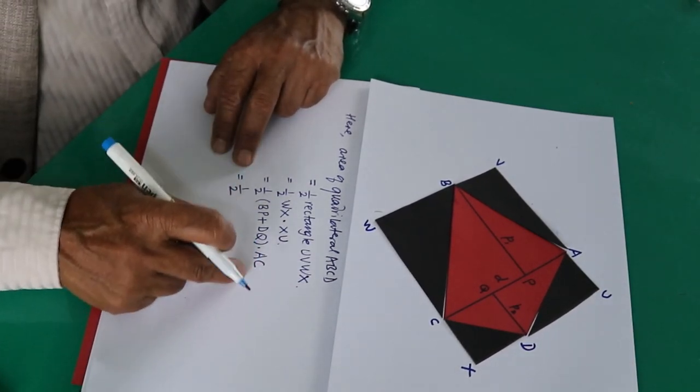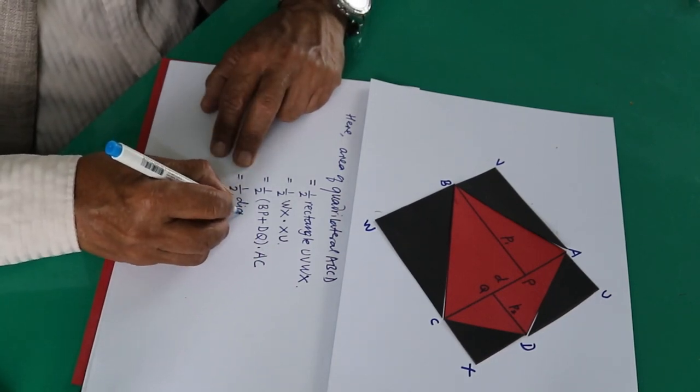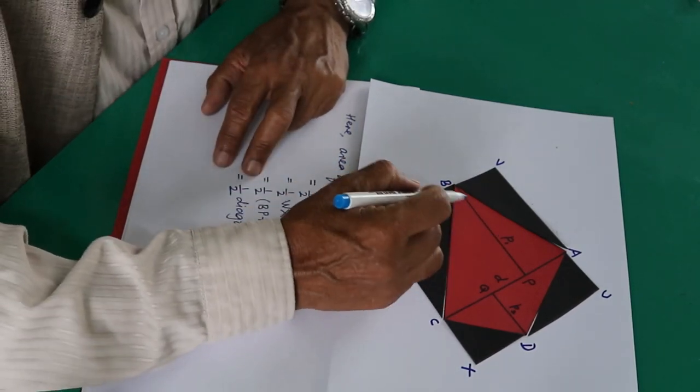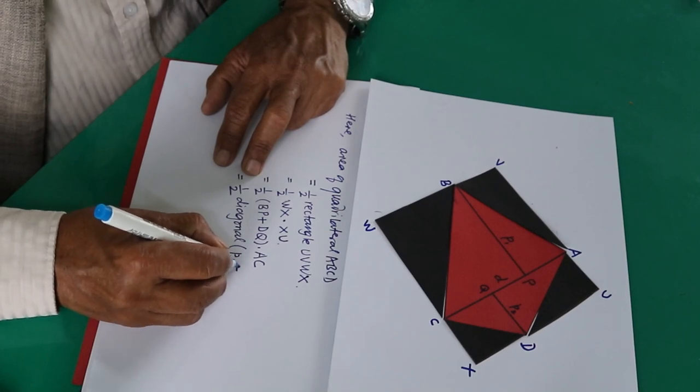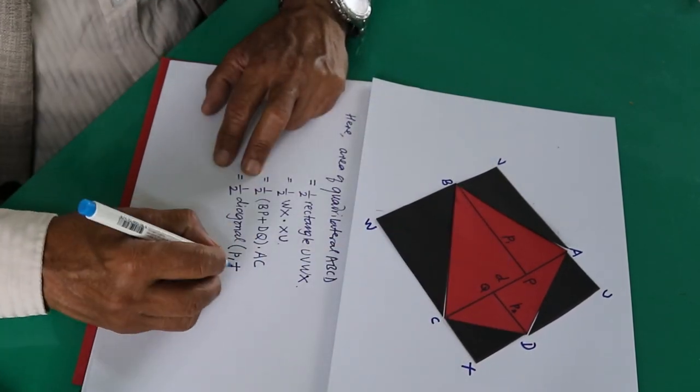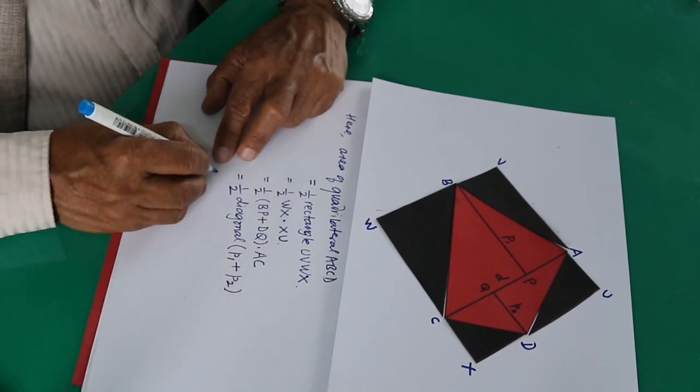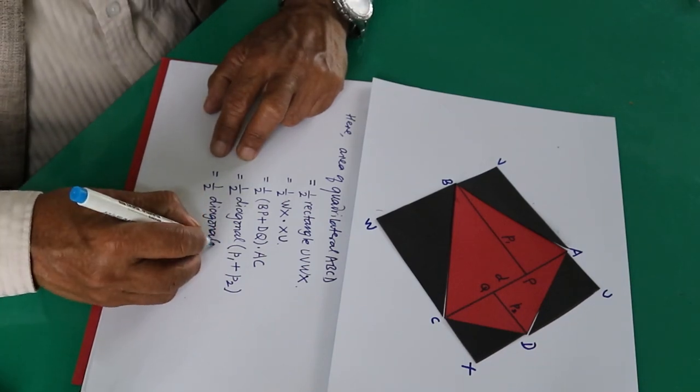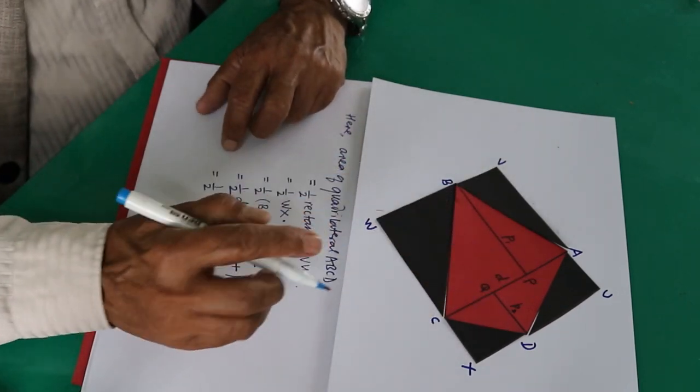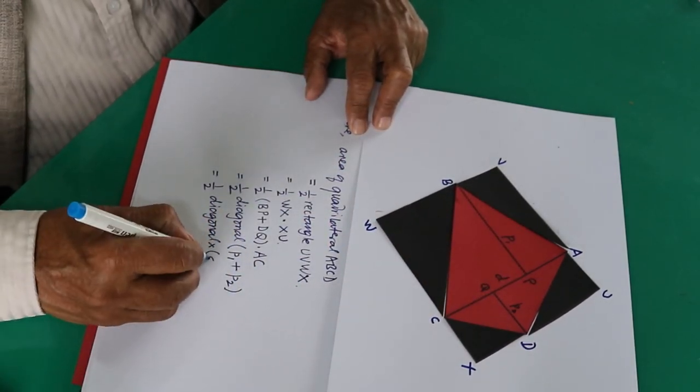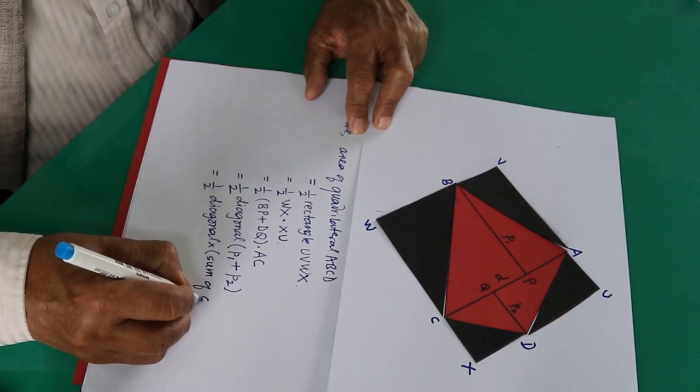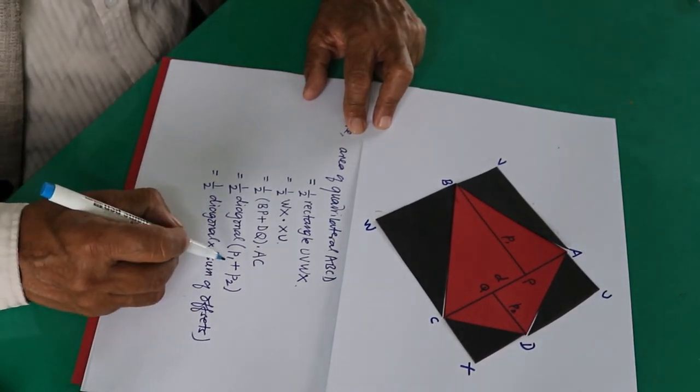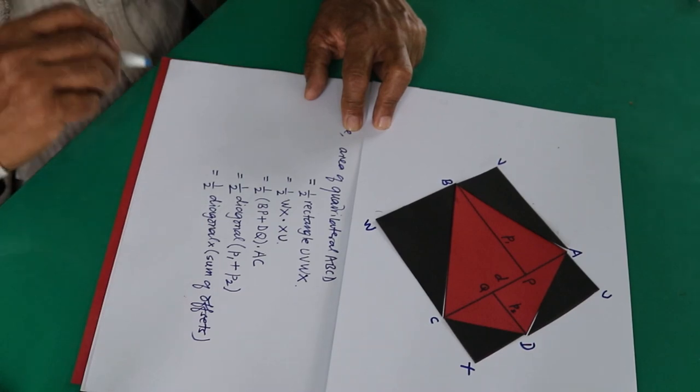So write half. This is already defined AC that is the diagonal. And that is the sum of BP is P1 plus DQ is P2. And actually in language it is half diagonal into the sum of offsets. Let me write here: sum of offsets. This is offset 1, this is offset 2, and they are added as the sum of two offsets.